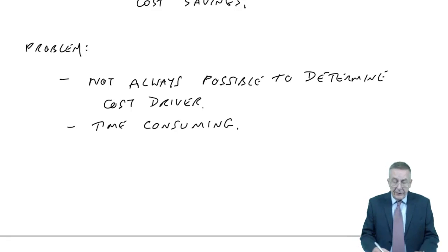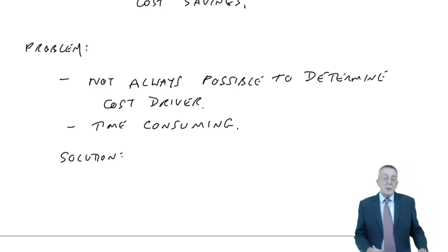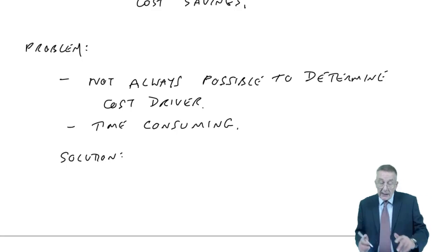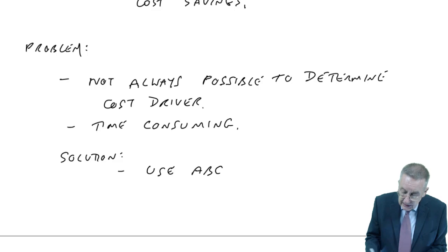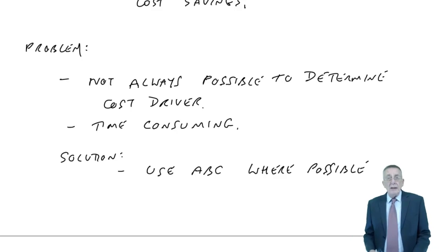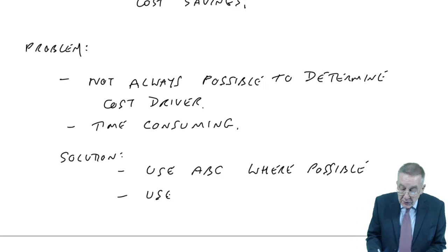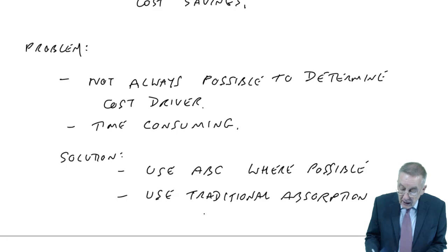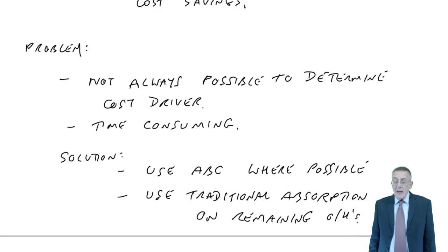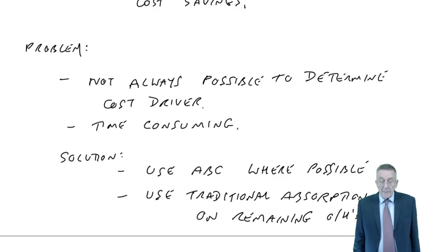What tends to happen in real life — the practical solution — is to go through the overheads, and where there is an obvious cost driver, like there were for each of the four in our question, then use activity-based costing where possible. But for any other overheads, like rent, where we can't decide on a cost driver and it's just not feasible, then perhaps on the remainder use traditional absorption on the remaining overheads. Not your problem in the exam — you'll be told what to do. I'm talking about any discussion questions here. That's what companies would tend to do to deal with that problem.